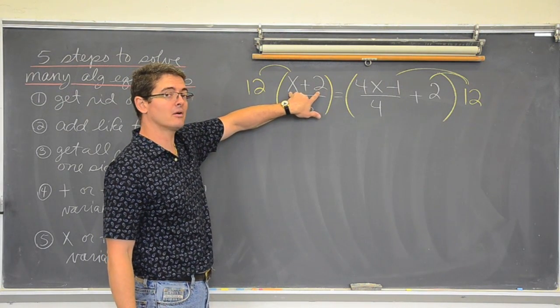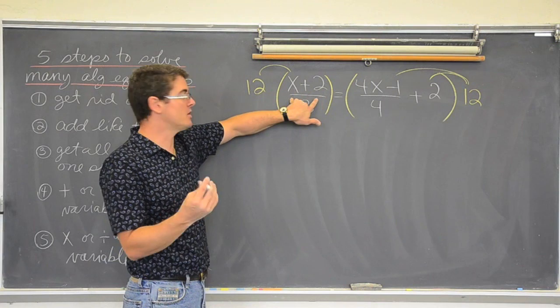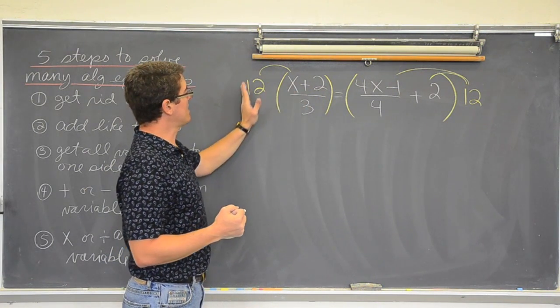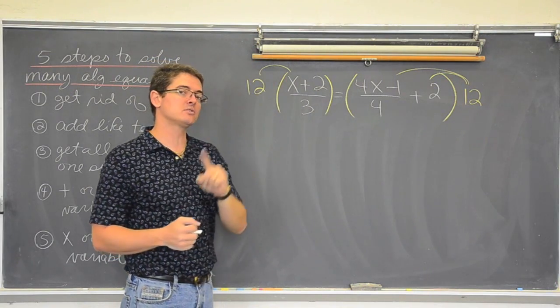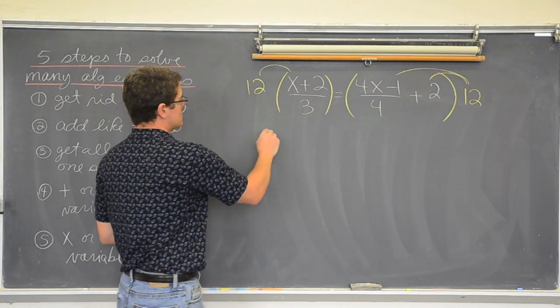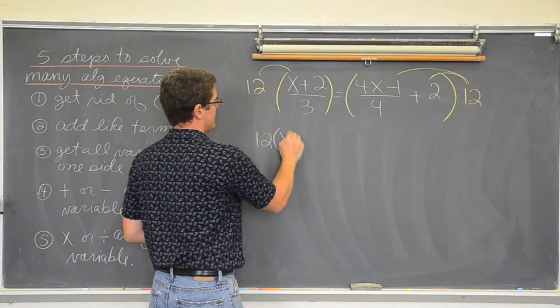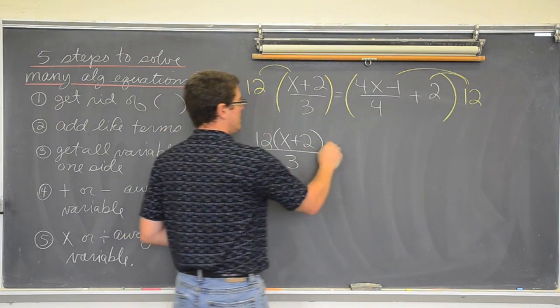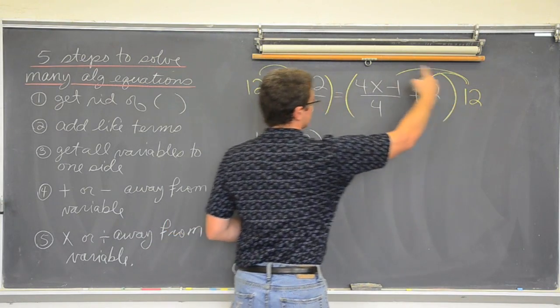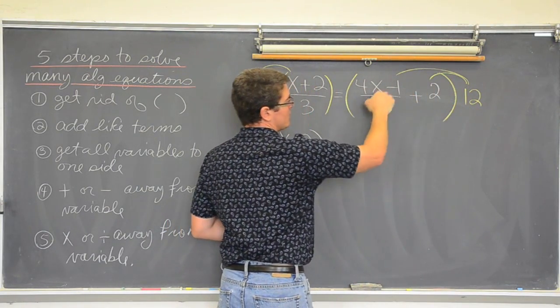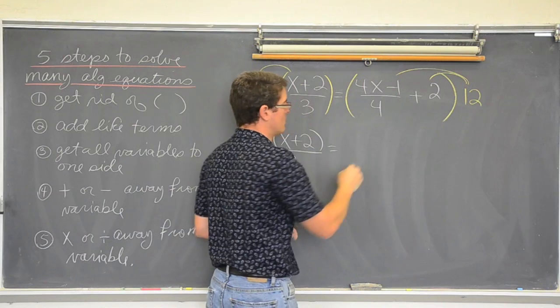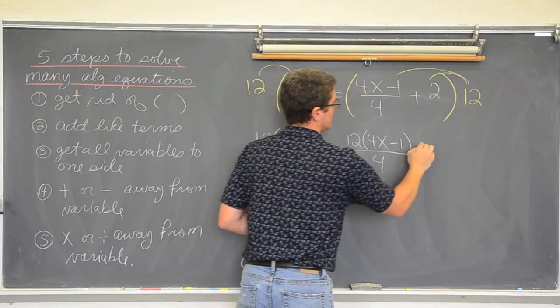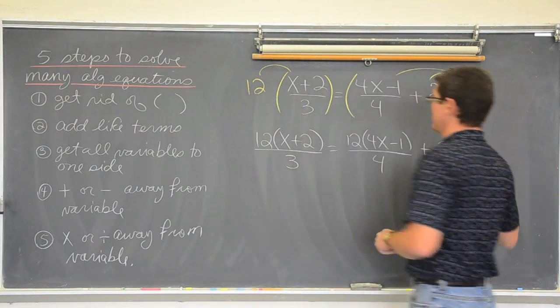This left side is a big old fraction bar. Now there are two terms up here. But this fraction bar is holding those two terms together. It is one term. It is a grouping symbol actually. So when I multiply by twelve, I only have to do it once. So, this is going to be twelve times x plus two over three. And we are going to have a cancellation here in a minute. Equals, same thing over here, one term and another term. Even though there is a lot going on here, this is one term. So, twelve times four x minus one over four plus two times twelve is twenty-four.